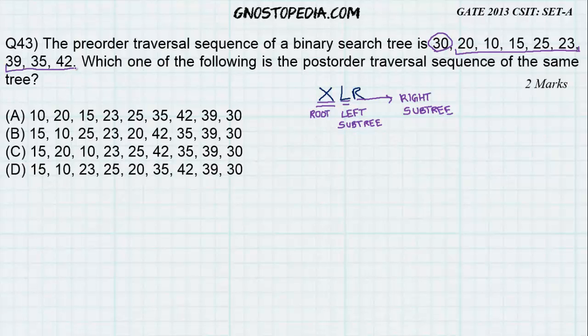Similarly, 39, 35, 42 will fall in the right subtree because it is greater than 30. Hence, if I have to draw it, it will look something like this.